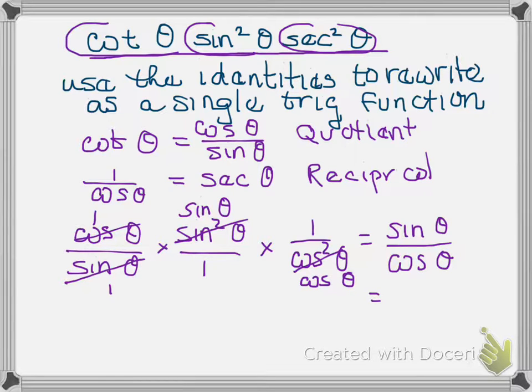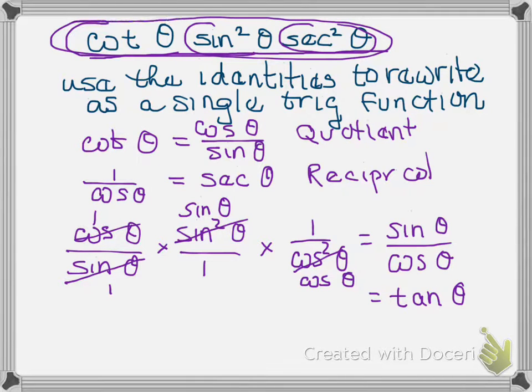And you might recognize that sine over cosine is a tangent. That is the quotient identity for tangent. And so we have rewritten this expression at the top here using identities into a single trigonometric function.